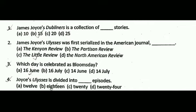Next question: James Joyce's Ulysses was first serialized in the American journal blank. The correct answer is C, that is The Little Review.